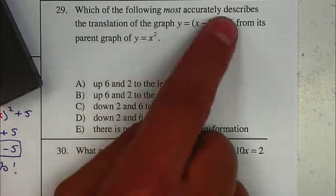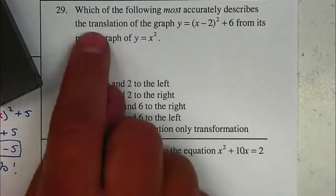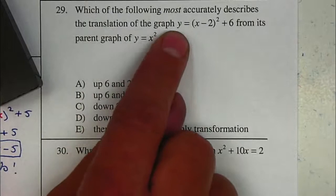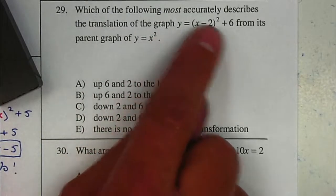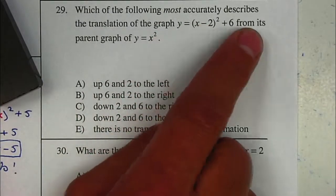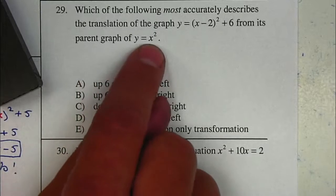Which of the following most accurately describes the translation of the graph y = (x - 2)² + 6 from its parent graph of y = x²?